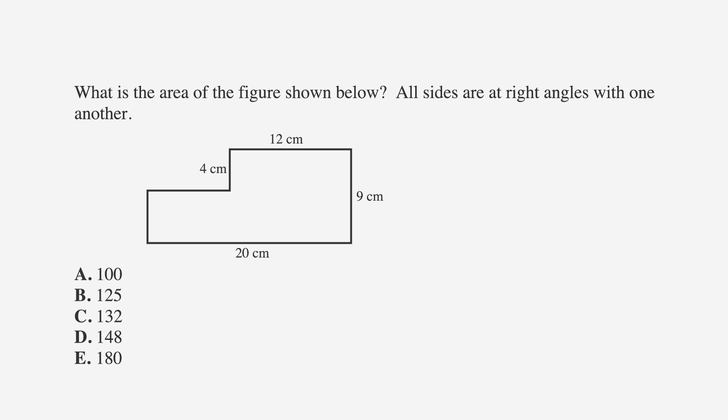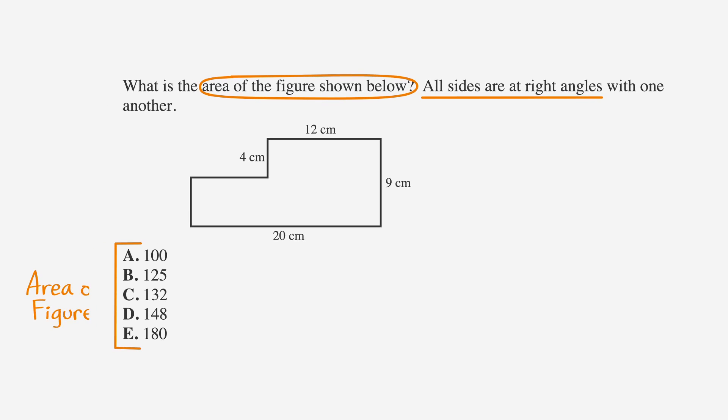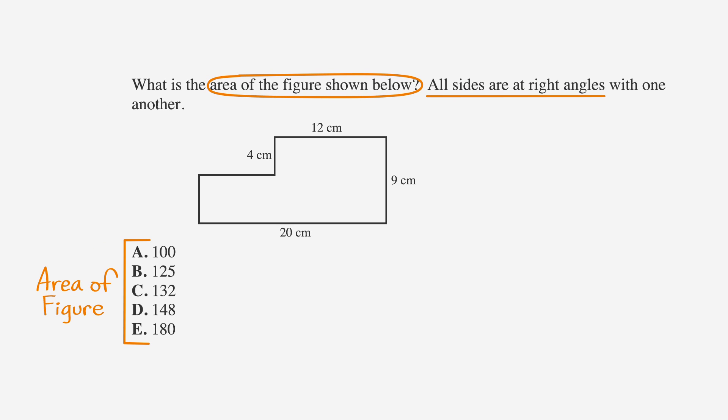Let's look at an example from the ACT. What is the area of the figure shown below? All sides are at right angles with one another. The answer choices are A 100, B 125, C 132, D 148, and E 180. Let's underline the facts, circle the keywords, and label the answer choices. The most obvious thing to do here is to divide this shape into two rectangles. So let's continue that middle horizontal line.